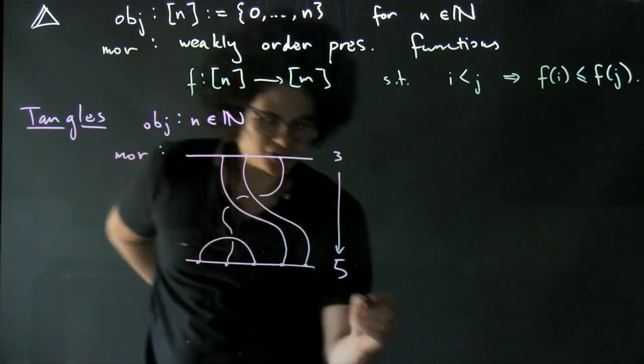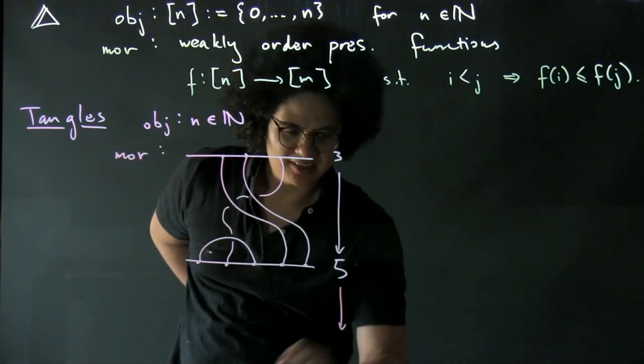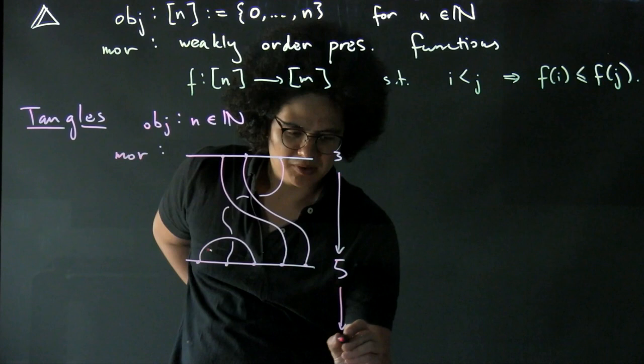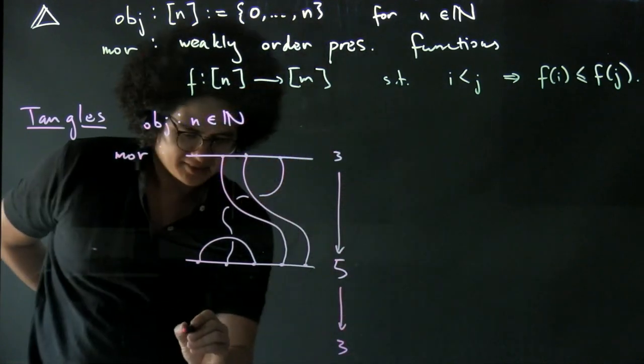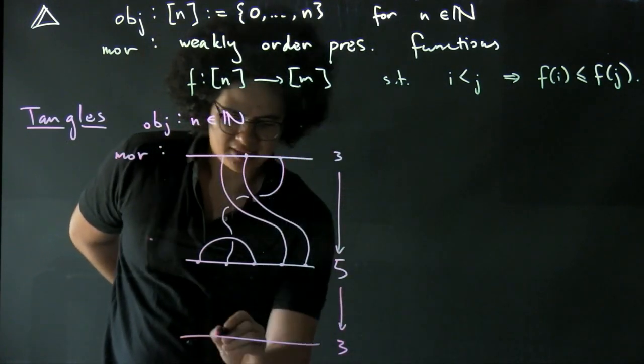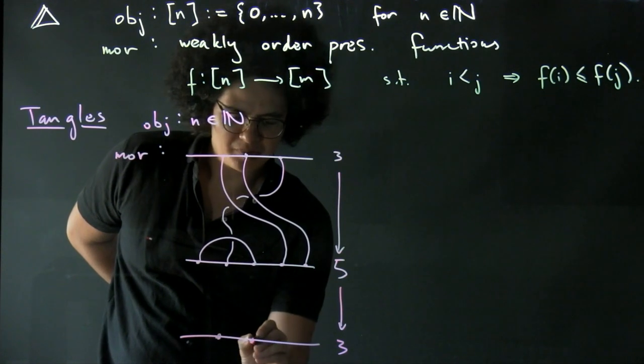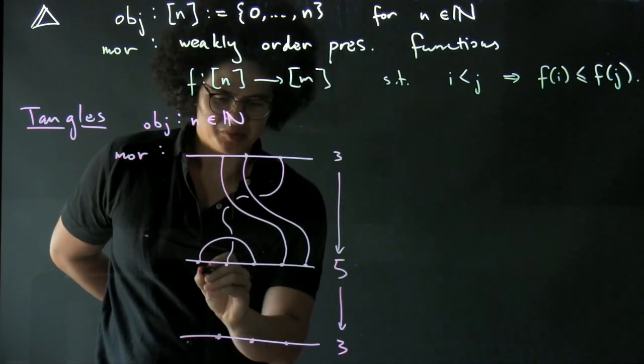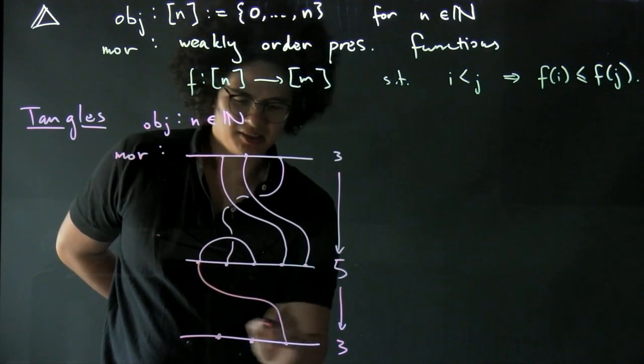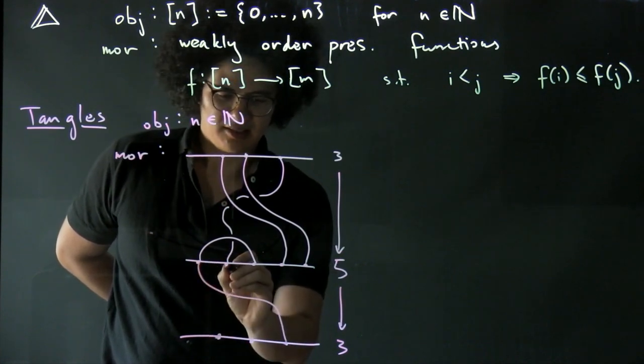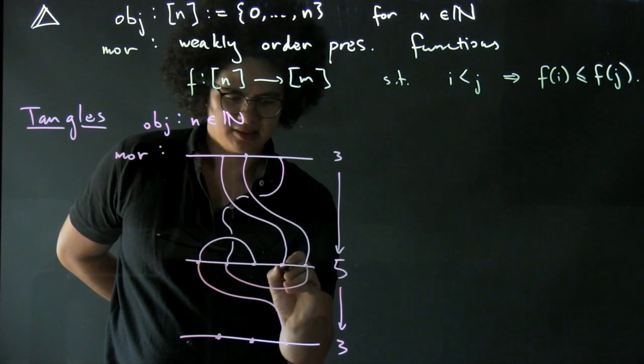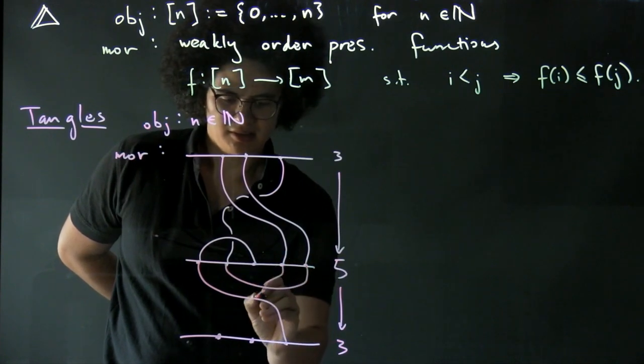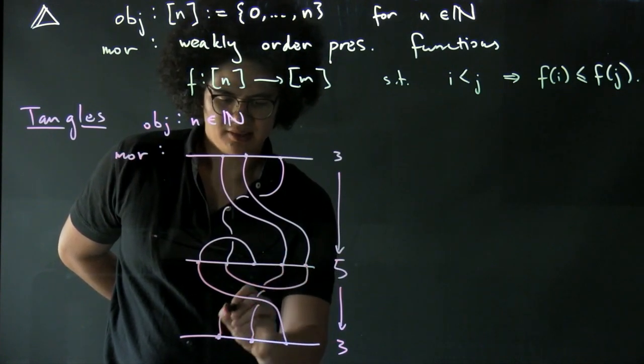So what's our composition? Our composition is going to be, say, now I want to go to back to three, say. And our composition is just going to be stacking of morphisms. So stacking diagrams of morphisms. So say I've got this, and this, and I'm going to go here, and here.